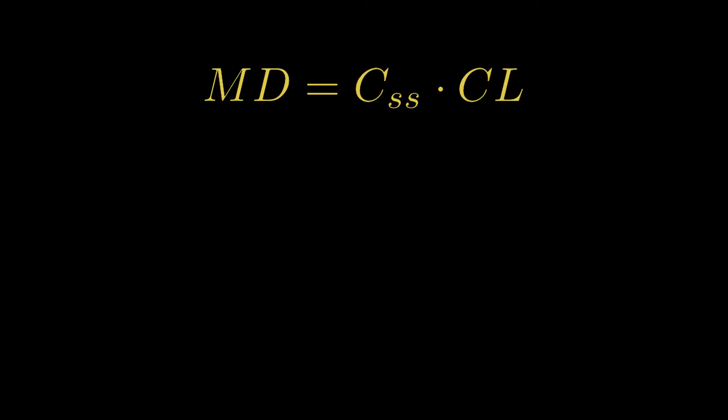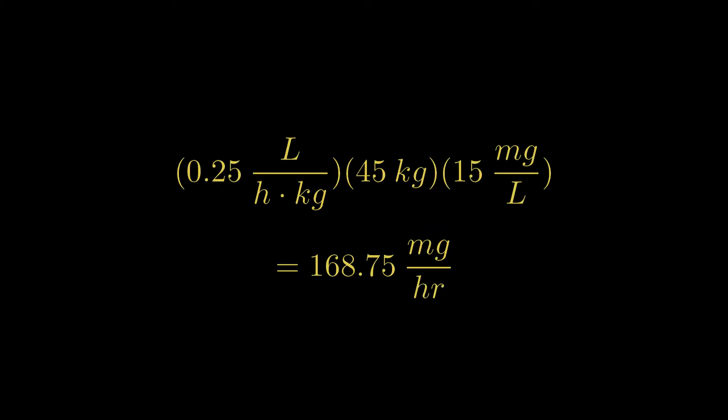We just plug in the numbers. We also need to factor in the weight, because the population parameter is given per kilogram, and this gives us 168.75 mg per hour.